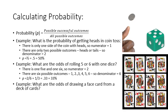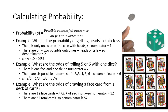What are the odds of drawing a face card from a deck of cards? Well, there are 12 face cards, Jack, Queen, King of each suit, so the numerator is going to be 12. And there are 52 cards in all, so the denominator is 52. 12 out of 52 is the same as 3 out of 13, which is 0.23 or 23%. You have a 23% chance of drawing a face card from a deck of cards.